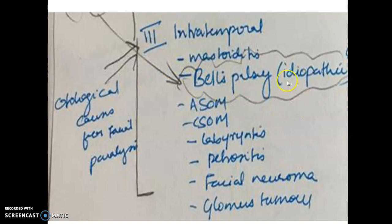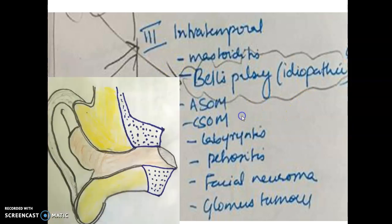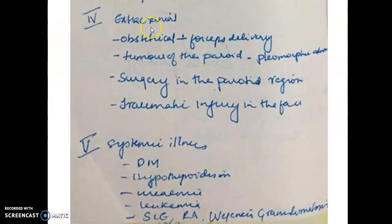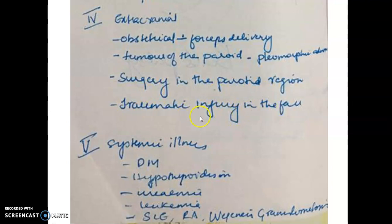One of the most common causes is Bell's palsy, where the exact cause is unknown — it is idiopathic, with hypothesized edema within the facial canal compressing the nerve. Extracranial causes include obstetrical forceps delivery over the mastoid process, tumors of the parotid gland — most commonly pleomorphic adenoma — parotid surgery, and traumatic facial injuries. Systemic causes include diabetes mellitus, hypothyroidism, leukemia, measles, and autoimmune disorders such as systemic lupus erythematosus and rheumatoid arthritis, which can cause edema of the bony facial canal.